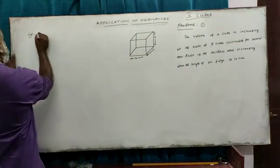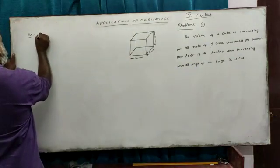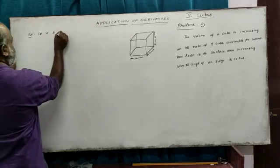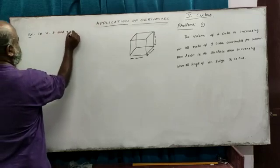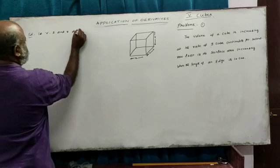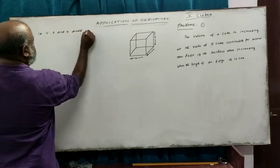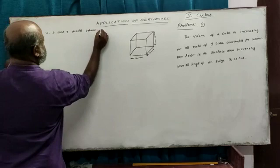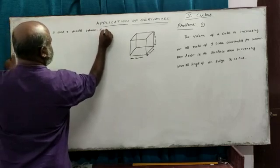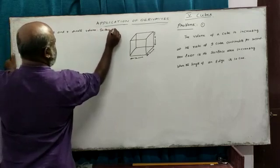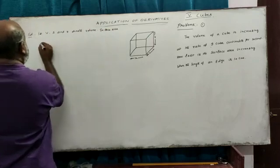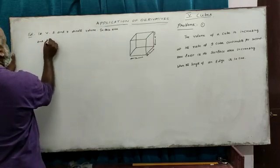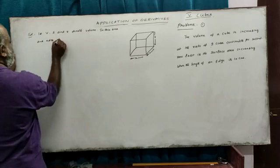Let V denote the volume, S denote the surface area, and X denote the edge length of the cube.